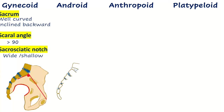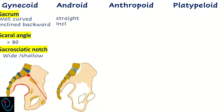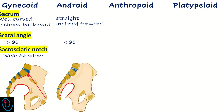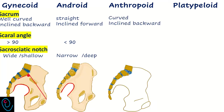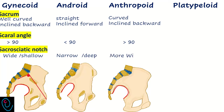In android pelvis, the sacrum is straight and inclined forward, making the sacral angle less than 90 degrees, and the sacrosiatic notch is narrow and deep. In anthropoid pelvis, the sacrum is long and narrow and inclined backward, the sacral angle is more than 90 degrees, and the sacrosiatic notch is wide and shallow.